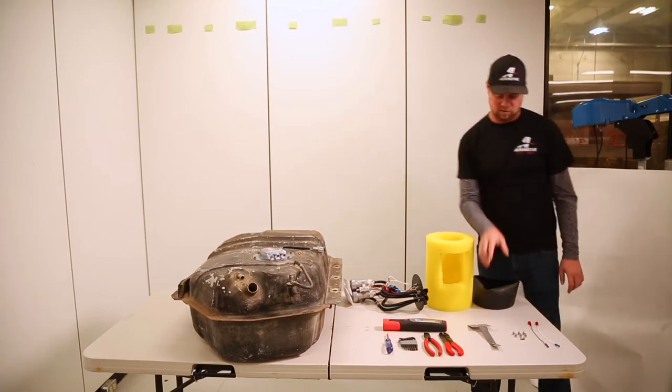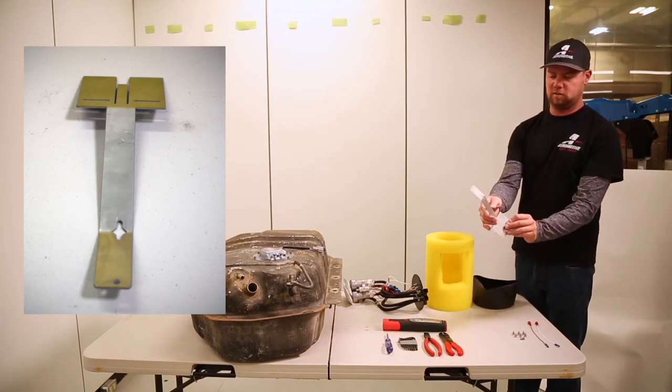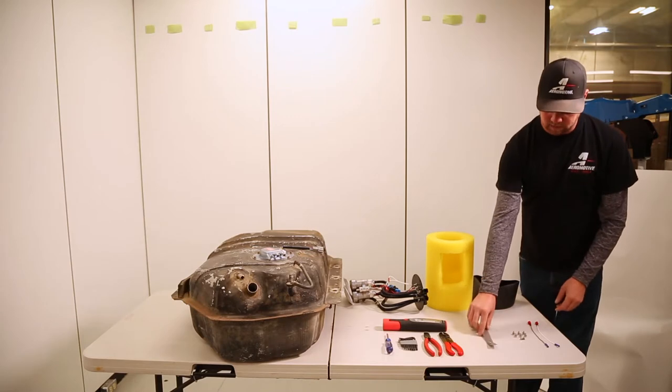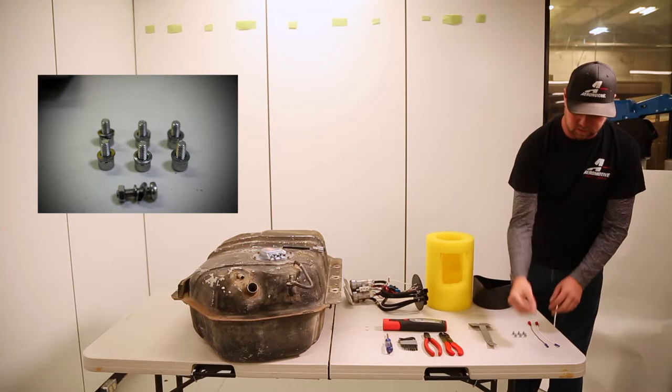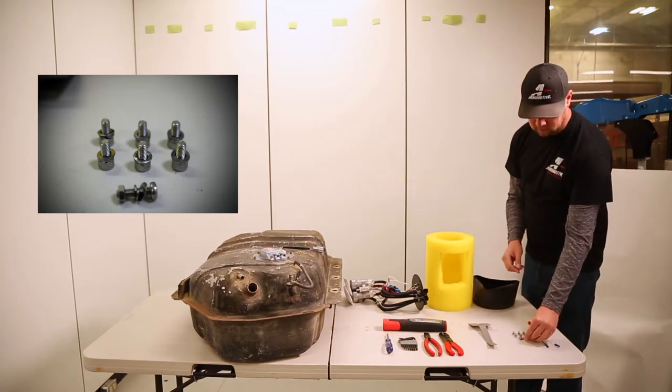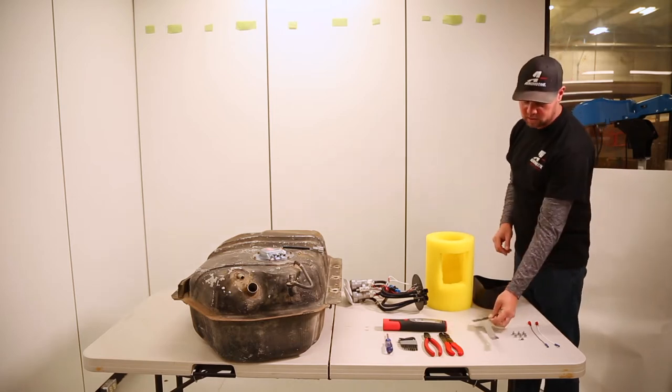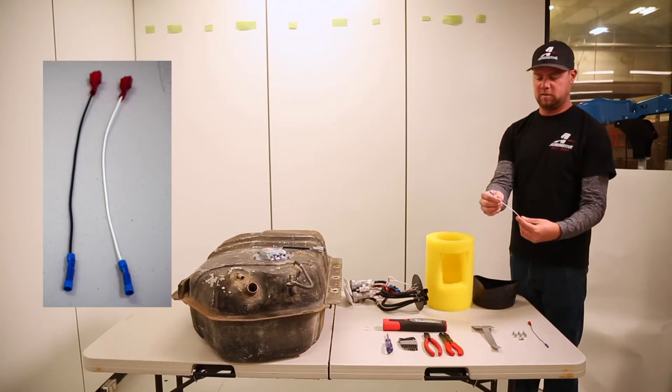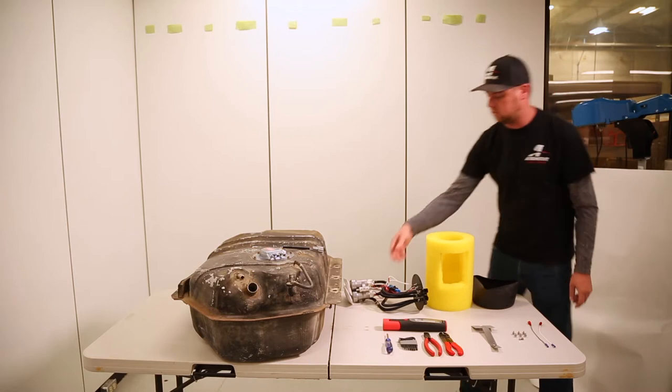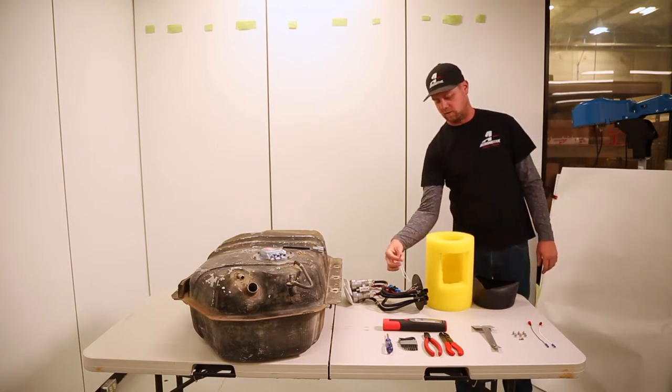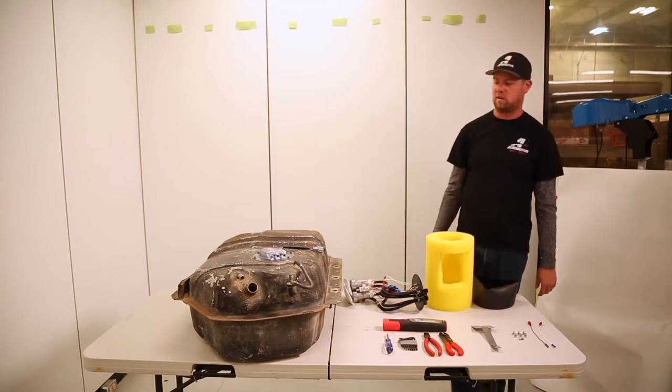Other items included: a sending unit bracket that we'll be attaching the factory sending unit to, six M5 screws to hold the outlet cap in place, one M4 screw and nut assembly to hold the sending unit to the bracket, and two small pigtail wires to attach to the factory sending unit giving extra length to connect to the white wires on the outlet cap, allowing you to retain the stock sending unit function.